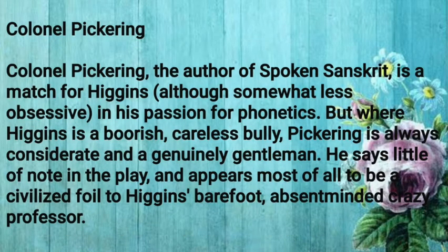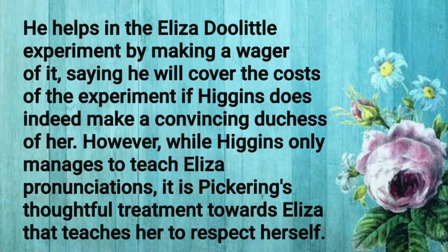The third character is Colonel Pickering. He is a friend of Higgins and treats Eliza as an equal. He is a linguist who studies Sanskrit. He met Higgins in London. He is a bachelor and is very gentle with Eliza, showing her a lot of respect — a contrast to Higgins. He has a military type of character.